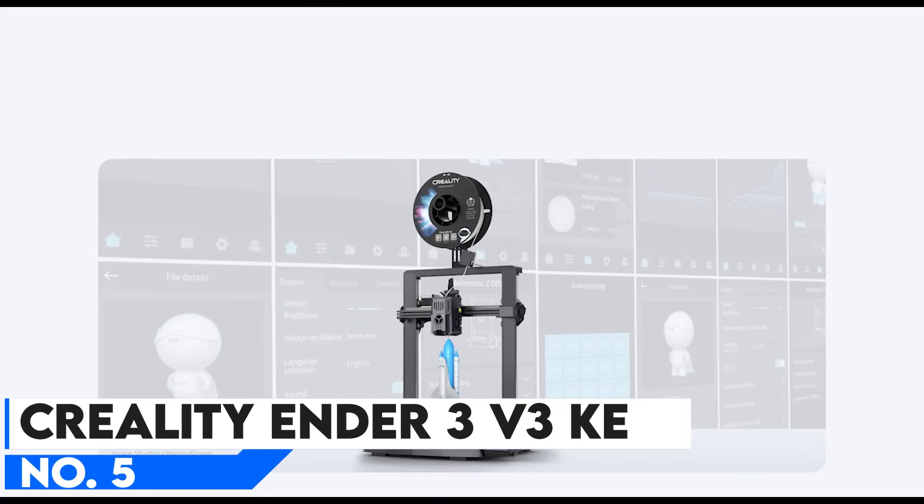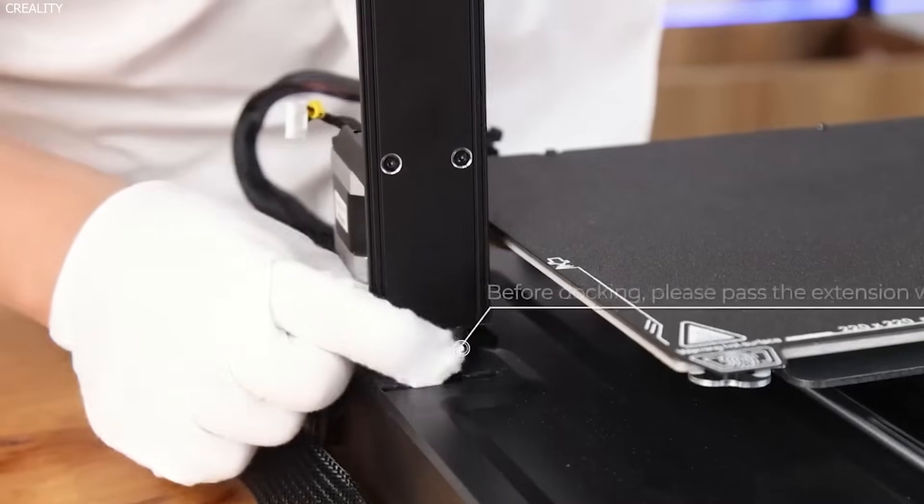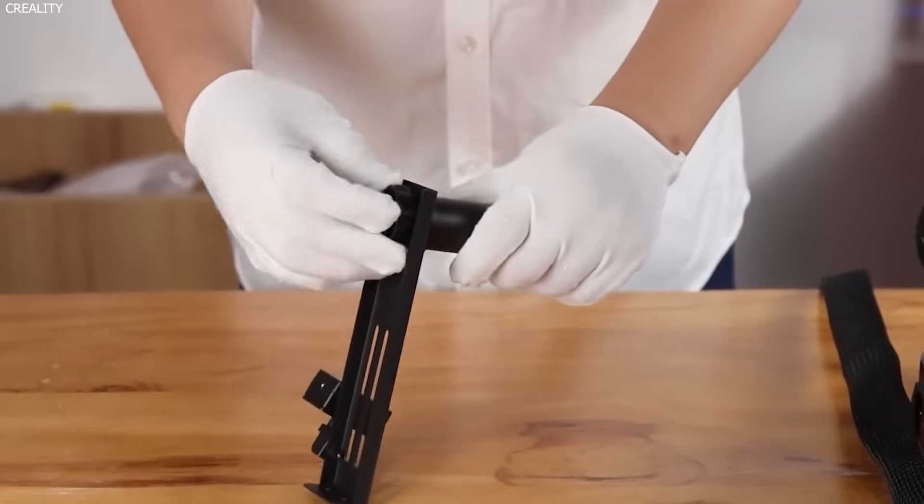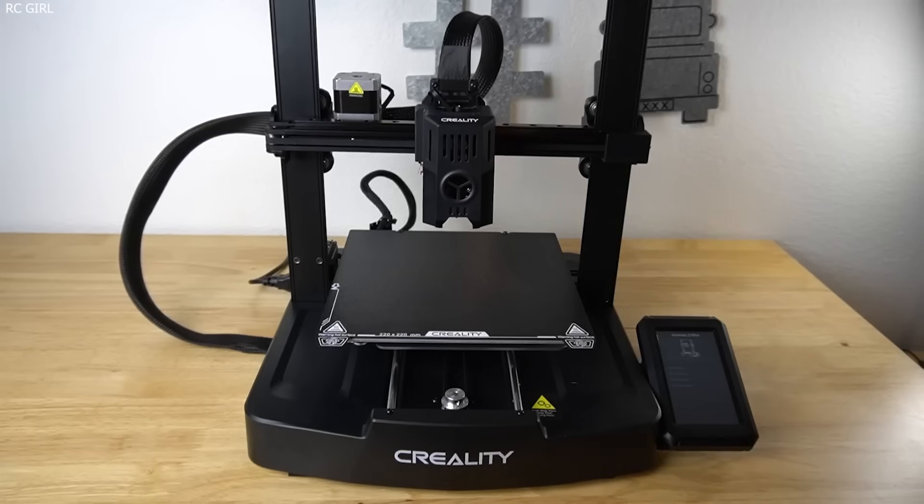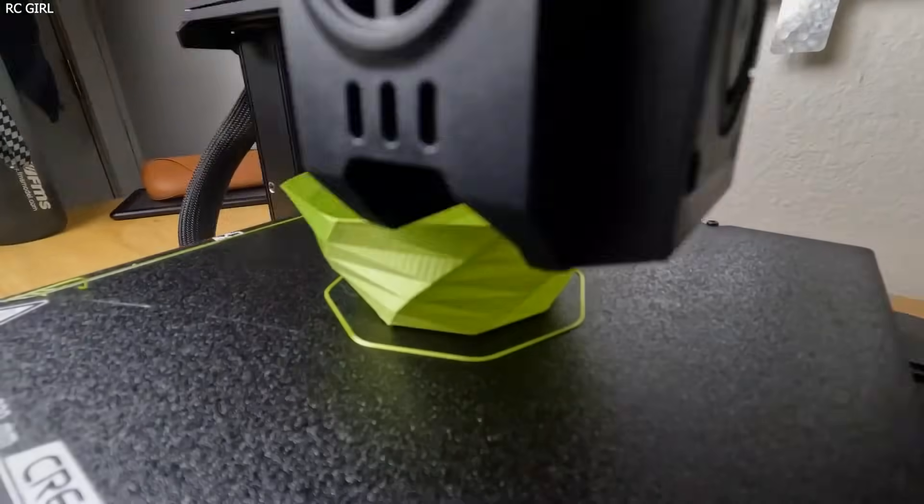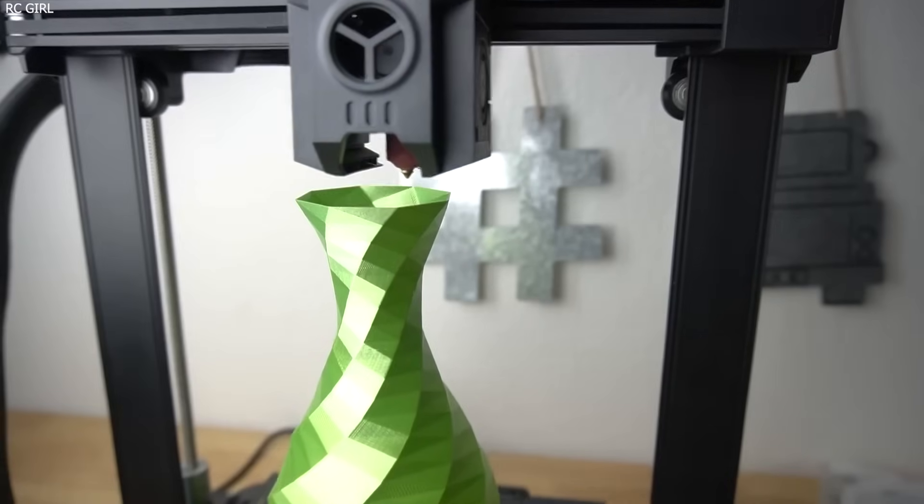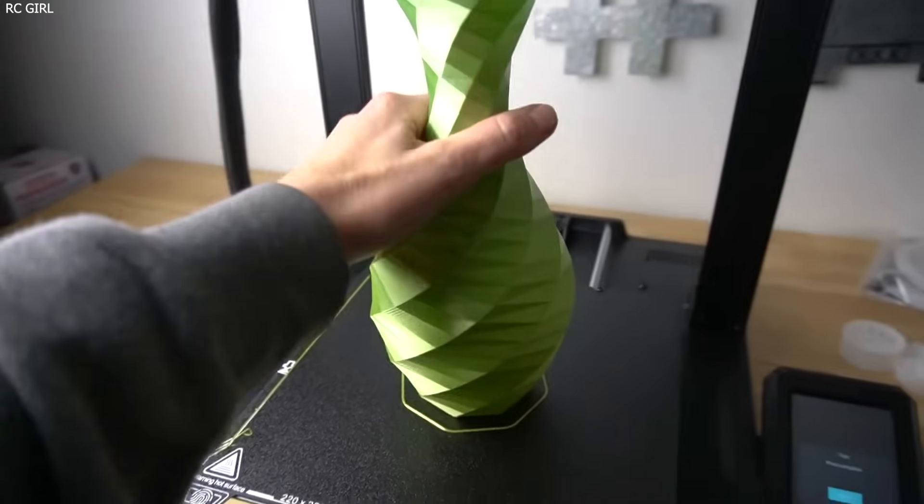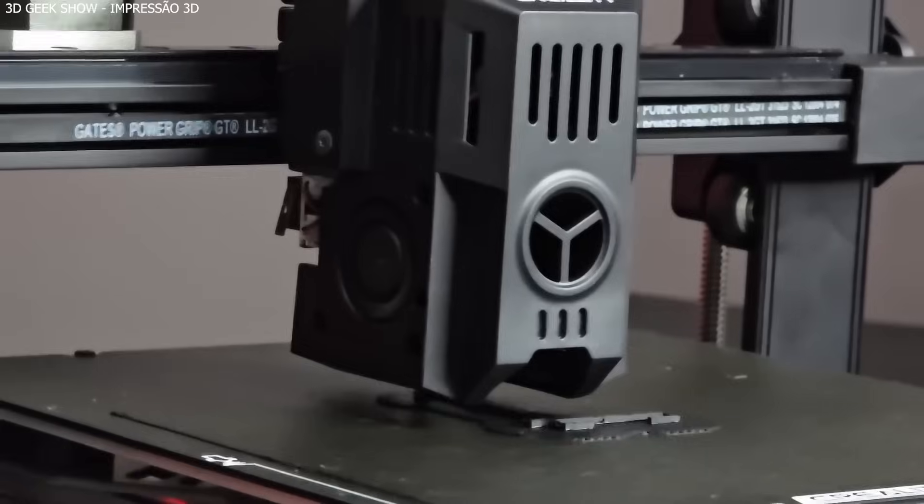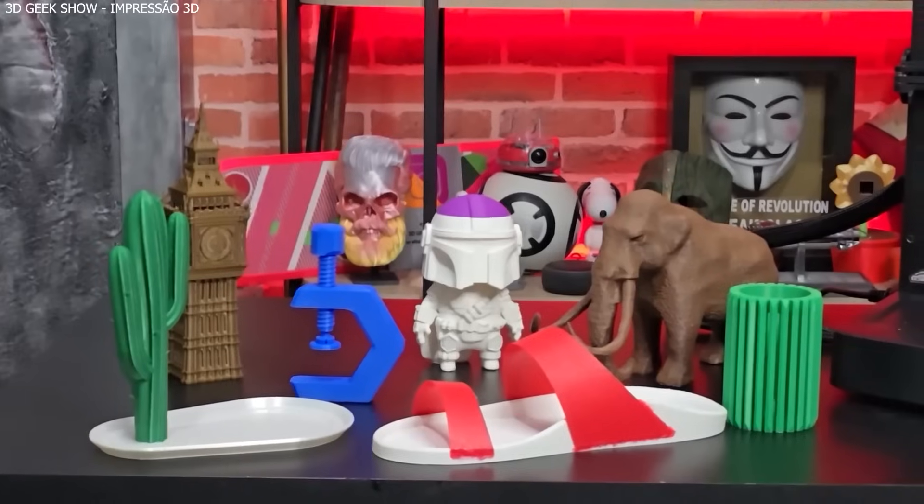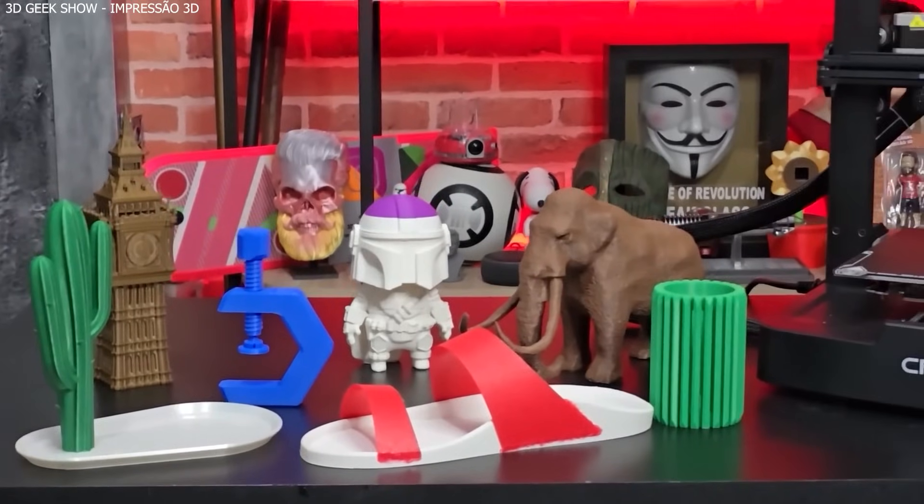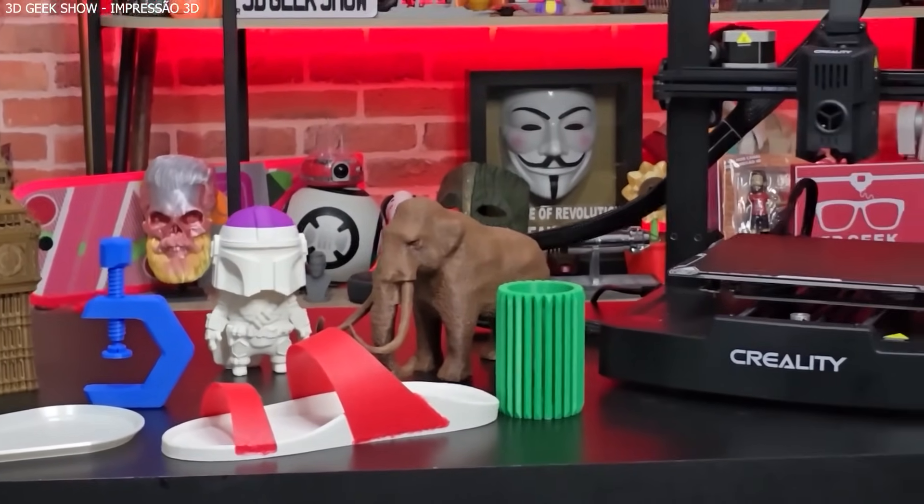Number 5: Creality Ender 3 V3 KE, Best Budget 3D Printer. For those on a budget who still want a feature-rich and reliable 3D printer, the Creality Ender 3 V3 KE is an unbeatable option. The Ender 3 series has long been a favorite among hobbyists, and the V3 KE model improves upon its predecessors with several enhanced features at an affordable price. With a printing speed of up to 250mm/s, this printer is faster than most budget models while still maintaining high accuracy. The automatic bed leveling feature makes it easy to set up, ensuring a hassle-free experience even for beginners.